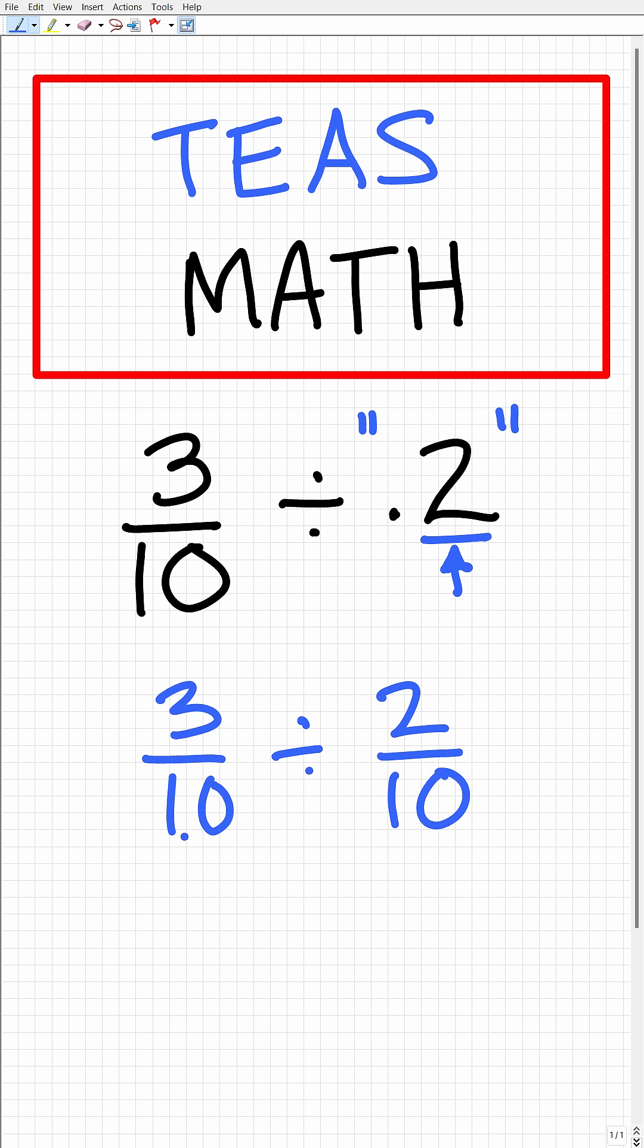Okay, so now we have to figure out how to divide fractions. And this is very easy because we don't really divide fractions per se. What we do is change the problem to multiplication. So 3 tenths divided by 2 tenths is equivalent to the fraction 3 tenths times fraction 10 over 2.